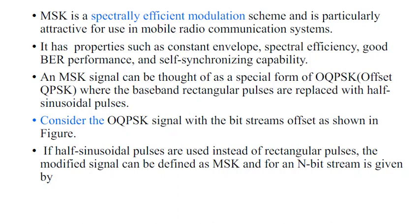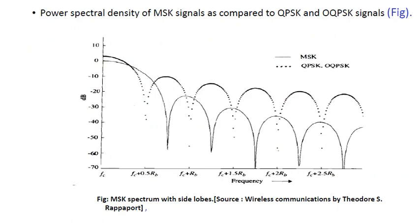An MSK signal can be thought of as a special form of offset quadrature phase shift keying (OQPSK) where the baseband rectangular pulses are replaced with half sinusoidal pulses. Consider an offset QPSK signal with the bit stream offset as shown in the figure below. If half sinusoidal pulses are used instead of rectangular pulses, that modified signal can be defined as MSK.